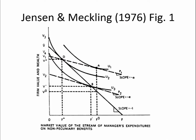This is figure one from Jensen and Meckling, 1976. It may look a little busy and convoluted at first, but we'll walk through it piece by piece. On the vertical axis, we have firm value and wealth — under the assumptions of Jensen and Meckling, firm value and wealth are identical for the owners of the firm. On the horizontal axis, we have the market value of the stream of managers' expenditures on non-pecuniary benefits. Pecuniary benefits are cash, so non-pecuniary benefits would be things like the comforts of the office, the esteem of the community — things that don't provide the manager with money but do provide benefit or utility.